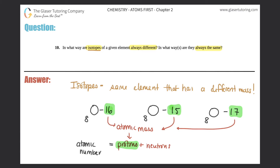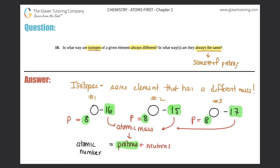If you change that eight to a nine, it turns into a different element — nine is fluorine. If you take one away, you get nitrogen, because nitrogen has seven. So eight is the atomic number for oxygen. That means for each one of these isotope samples — sample one, two, and three — we have eight protons each.